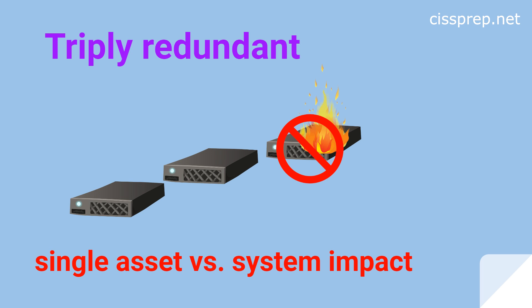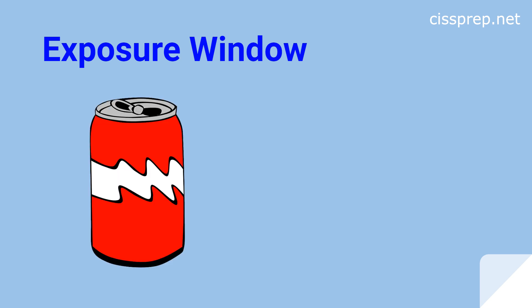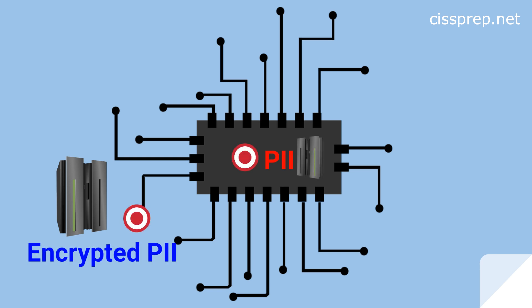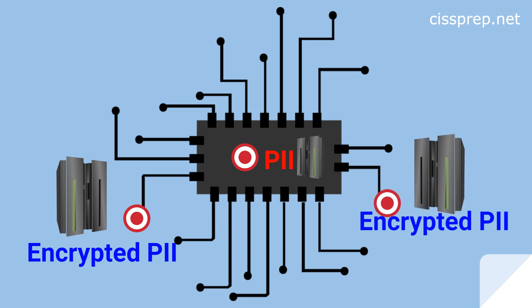Exposure window refers to the time period that an asset or organization is exposed to the risk. Think of the soda you just had with lunch today — once you open the can, it's at risk of going flat. In hot weather, you've got about 30 minutes to an hour to either put it in the fridge or drink the rest of it, otherwise it's going to turn into syrup. A better example might be if you have data in transit that sits on a server for one hour in plain text before it gets encrypted, or maybe it's decrypted and sits on a server and then gets re-encrypted at its destination. The exposure window in this case would be one hour.